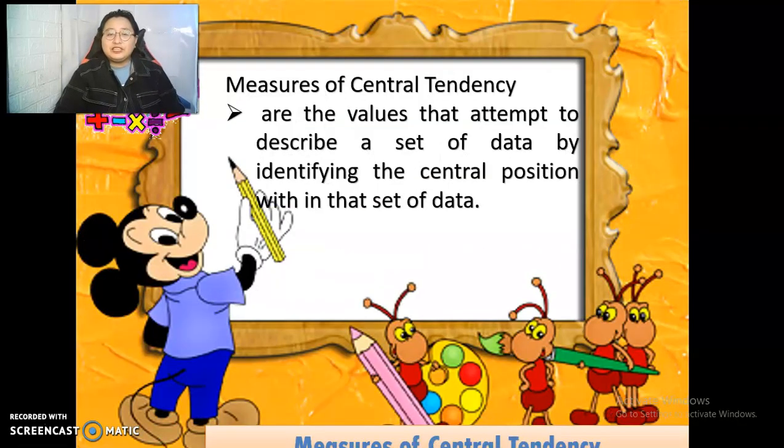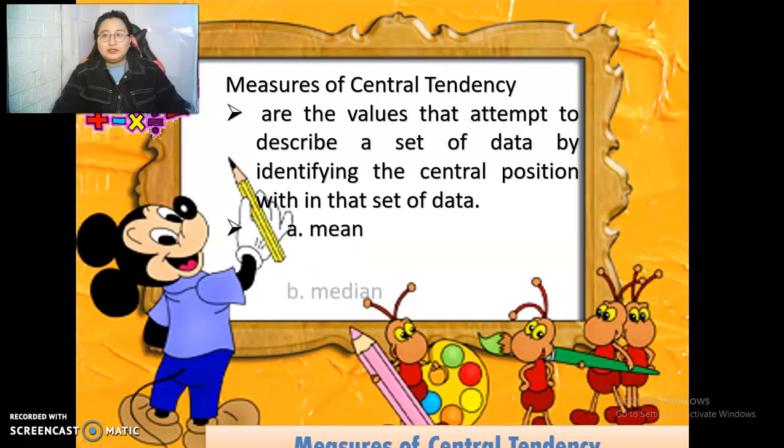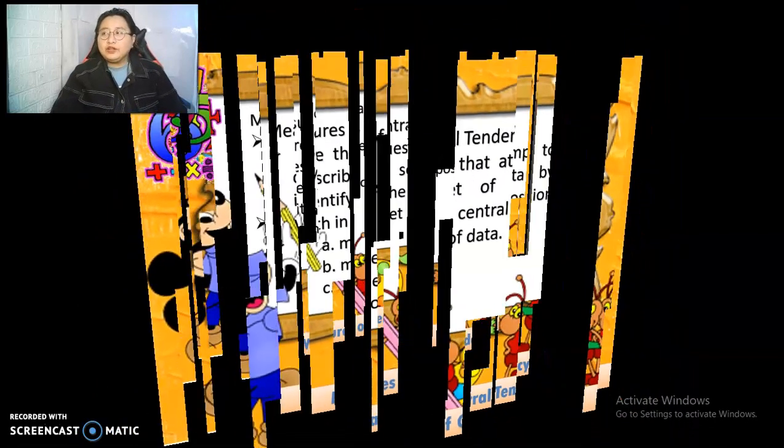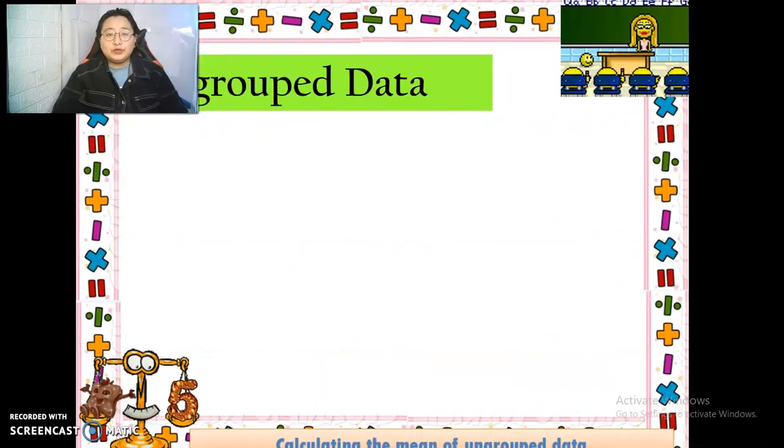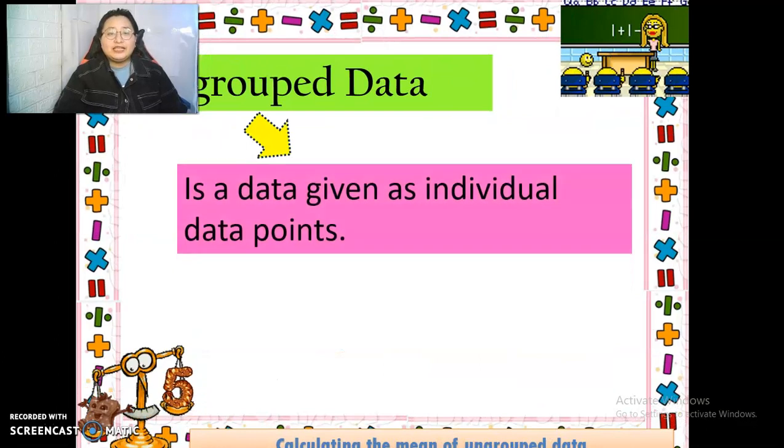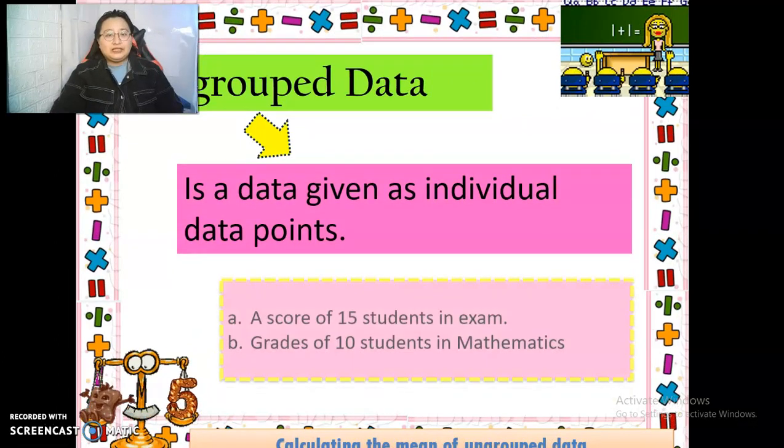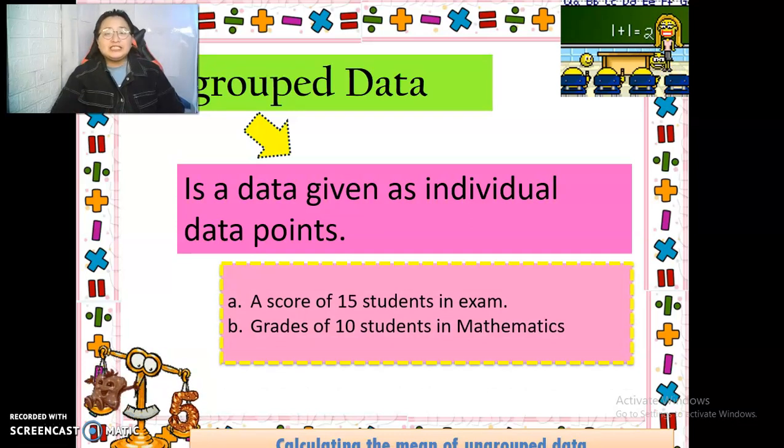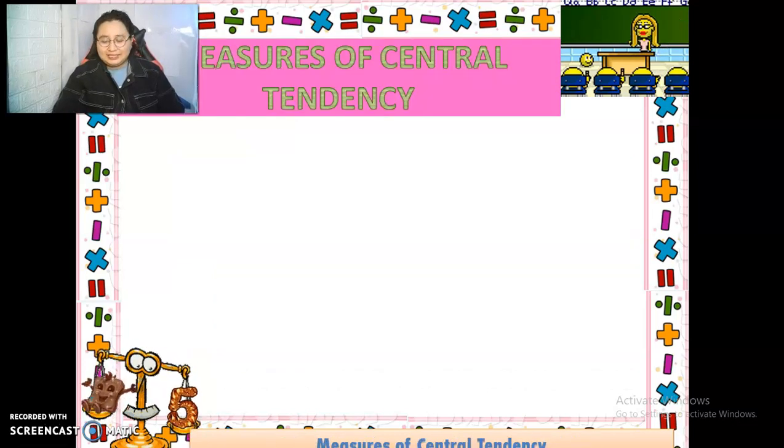The measures of central tendency are the values that attempt to describe a set of data by identifying the positions within that set of data. The three major measures of central tendency are the mean, median, and the mode. Ungrouped data are the group of data that is given as individual data points, for example, a score of 15 students in an exam.